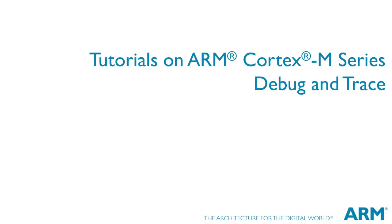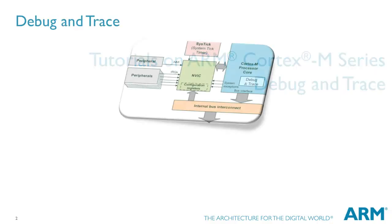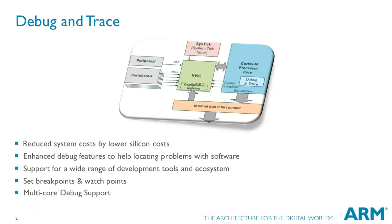Welcome. This is a series of tutorial videos on ARM Cortex-M processors. This video will deep dive further to discuss Debug and Trace. One of the key features of the Cortex-M family is the use of Coresight, the ARM Debug and Trace technology, which is the most complete on-chip debug and real-time trace solution.